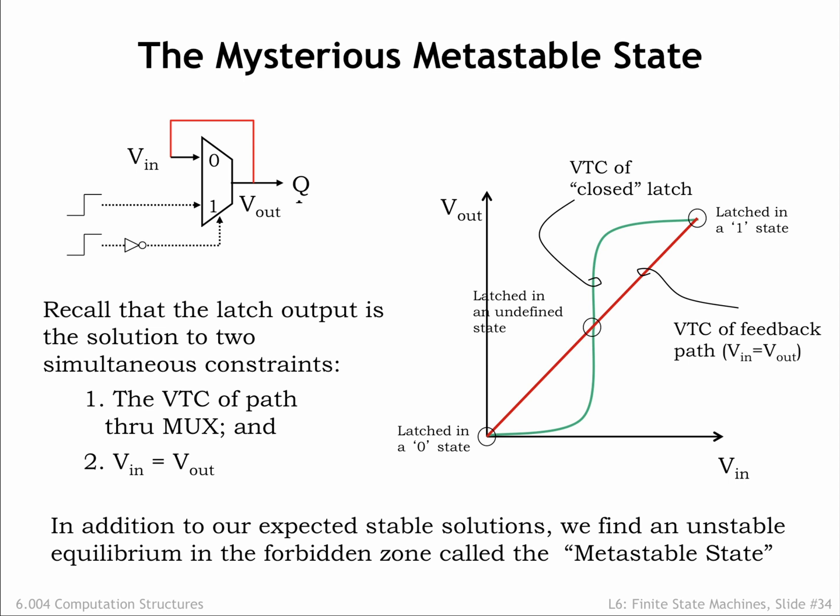Our concern is the middle point of intersection. If IN and clock change at the same time, the voltage on Q may be in transition at the time the MUX closes and enables the positive feedback loop. So the initial voltage in the feedback loop may happen to be at or very near the voltage of the middle intersection point.